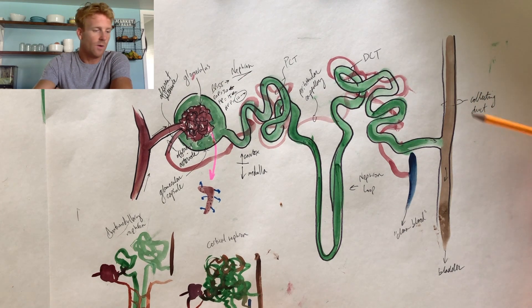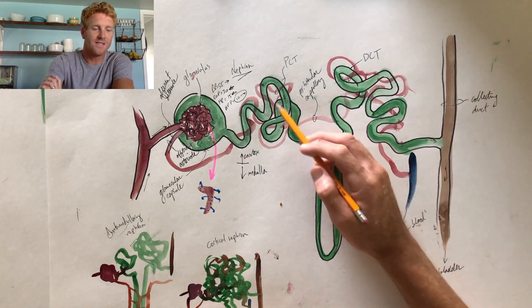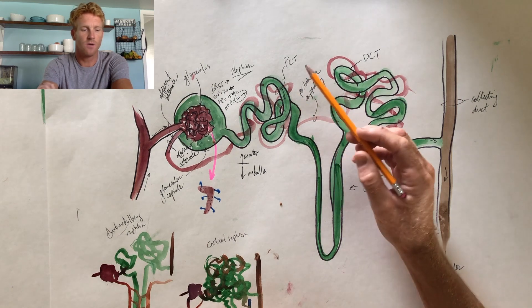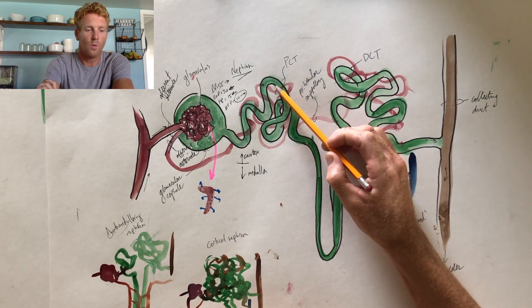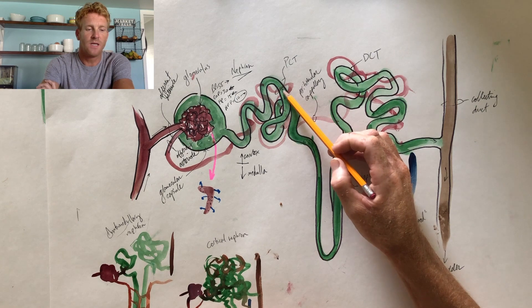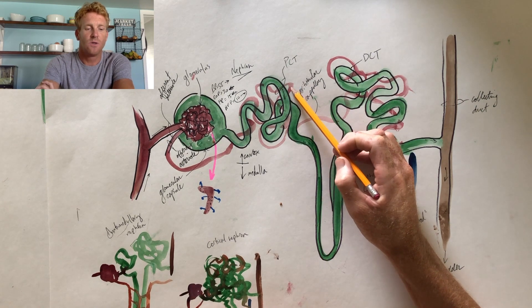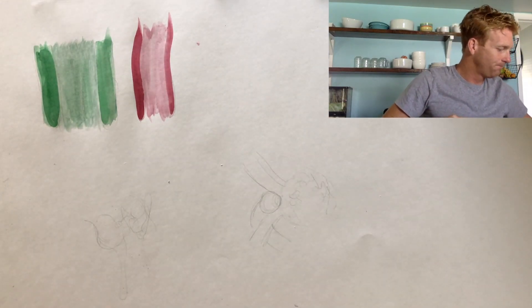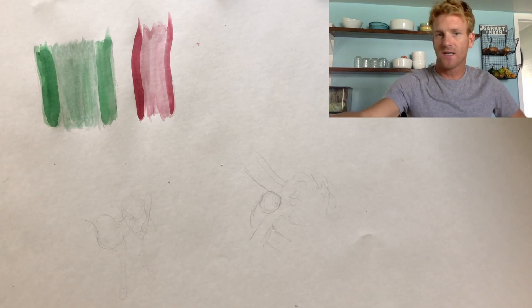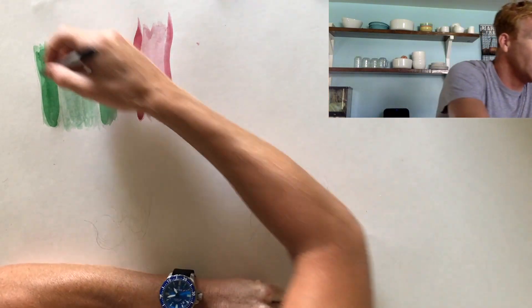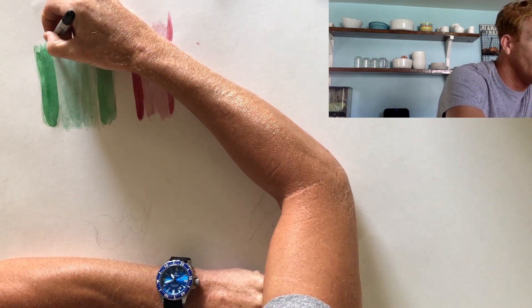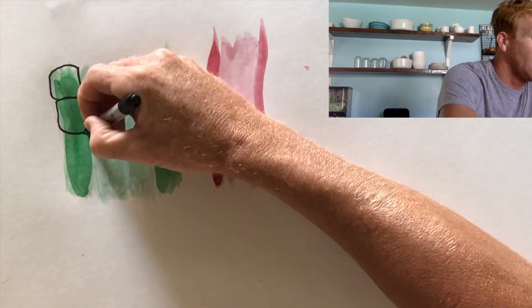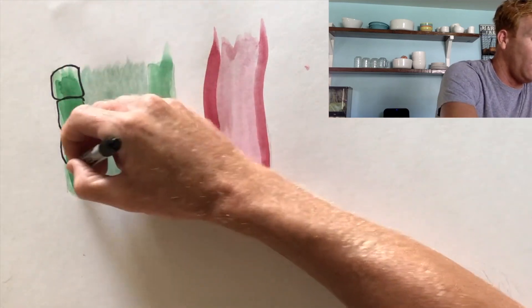Now I want to focus on exactly how these convoluted tubules are able to reabsorb the good stuff. We're going to zoom in on one little section involving a piece of the convoluted tubule next to one of these peritubular capillaries. In green, this is a section of the convoluted tube, which is made up of cuboidal epithelial cells that line and make up the walls of this tube.